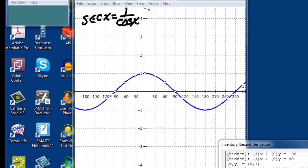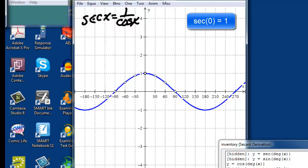When x equals 0, the cosine of x equals 1. So the reciprocal of 1 is 1, and we end up with a point for the secant graph as well. So we'll start with that point.